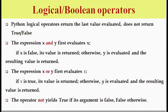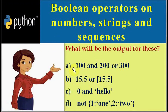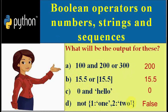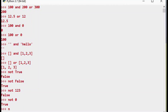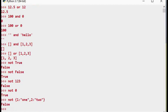To summarize the examples: 400 AND 200 returns 200; 15.5 OR 15.5 returns 15.5 since it is non-zero; 0 AND 'hello' returns 0. For a non-empty dictionary, since it is not empty it is considered true, so NOT of that dictionary returns false. That's it about Python logical operators — thanks for watching.